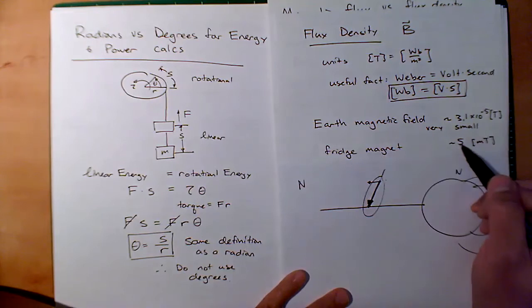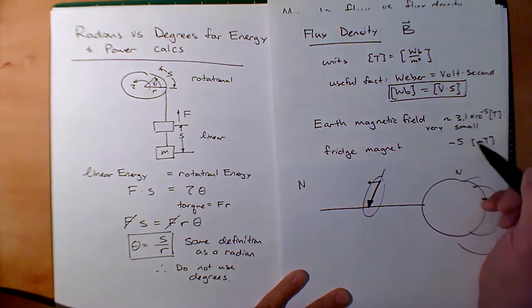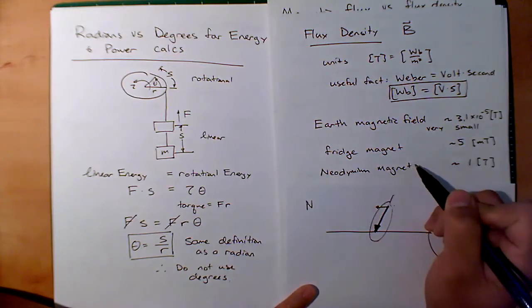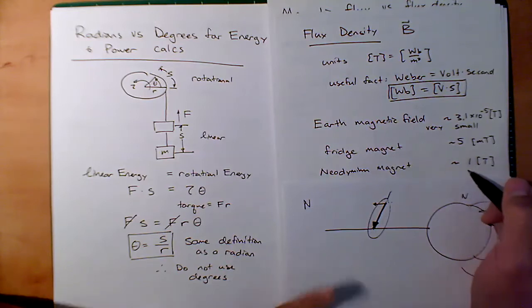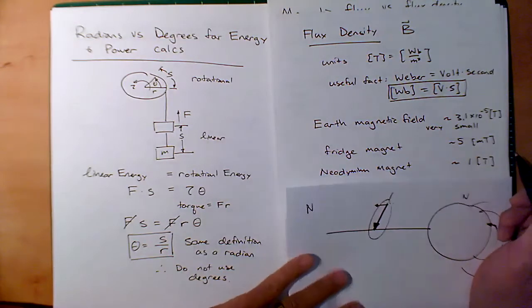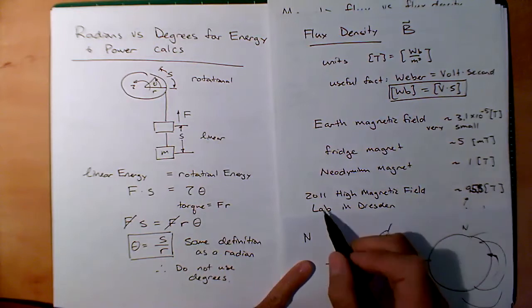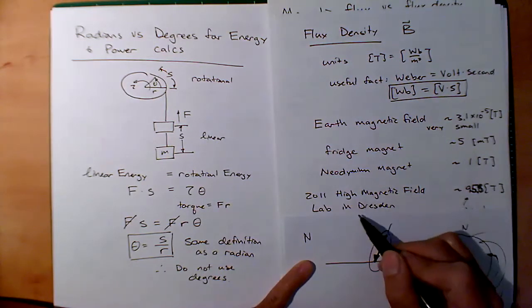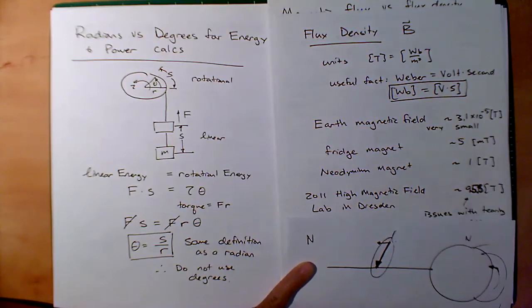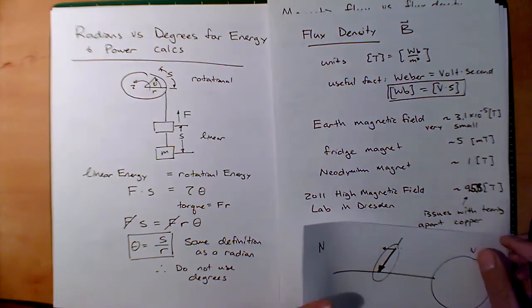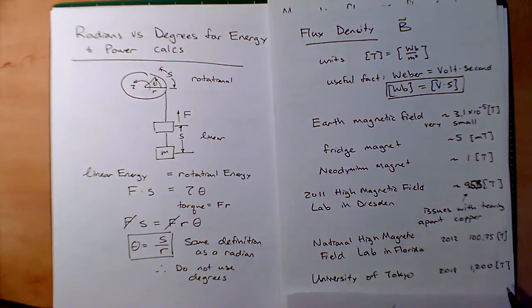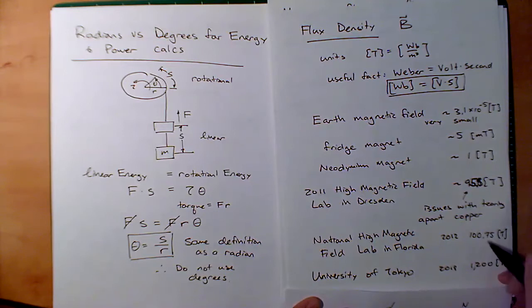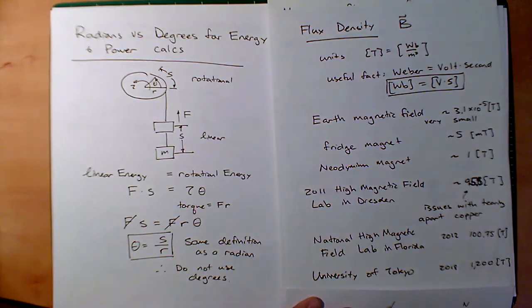A neodymium magnet, which we may use in projects, is on the order of half to one Tesla — and we know those are strong enough to pinch fingers and cause bleeding, so you have to be careful. According to Wikipedia, in 2011 the high magnetic field lab in Dresden produced 95.8 Tesla, causing issues with tearing apart copper in their coils. In 2012, the National High Magnetic Field Lab in Florida produced 100.75 Tesla. And recently in 2018, the University of Tokyo produced 1200 Tesla.